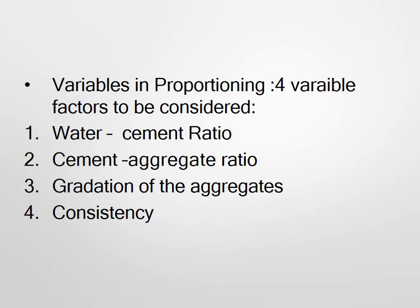The variable proportioning factors that are considered: first is the water-cement ratio, second is the cement-aggregate ratio, third is the gradation of the aggregate, and fourth is consistency. The water-cement ratio is the ratio of water to cement. Gradation of aggregate means the aggregates are well-graded or gap-graded, and what sizes of aggregate are available. Consistency also depends on the water content.